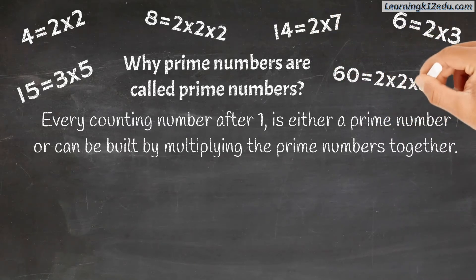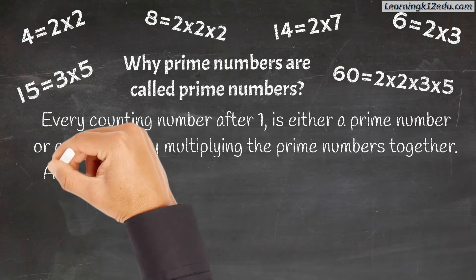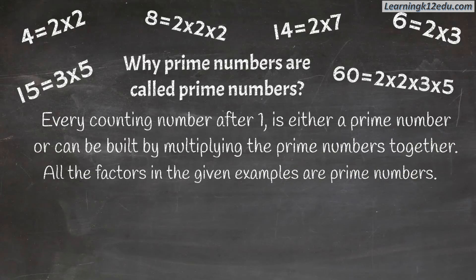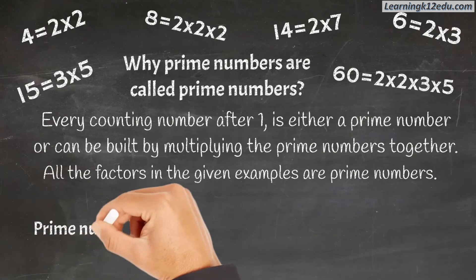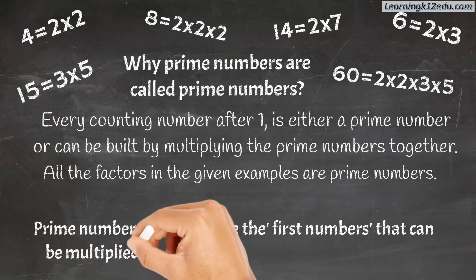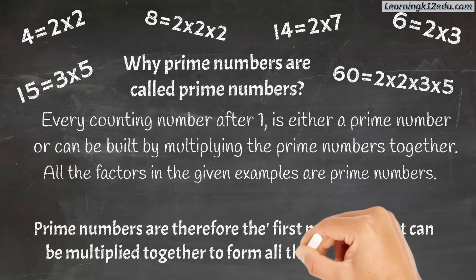60 equals 2 times 2 times 3 times 5. All the factors in these examples are prime numbers. Prime numbers are therefore the fundamental numbers that can be multiplied together to form all other numbers.